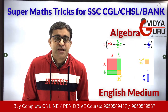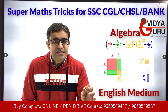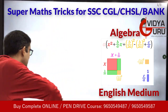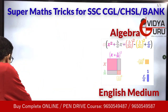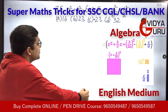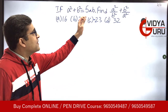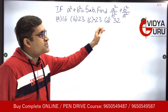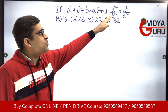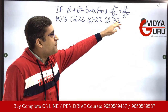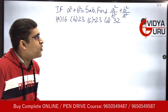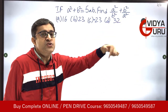Let's get started with the first question which has appeared in the past. The question is: a² + b² = 5ab. You have to find out the value of a²/b² + b²/a².